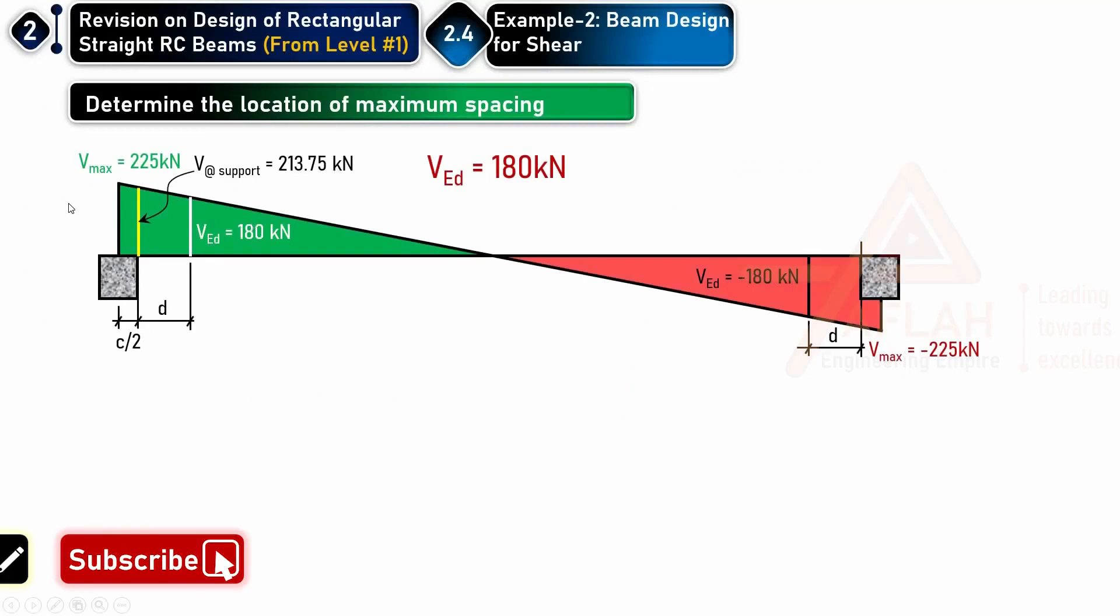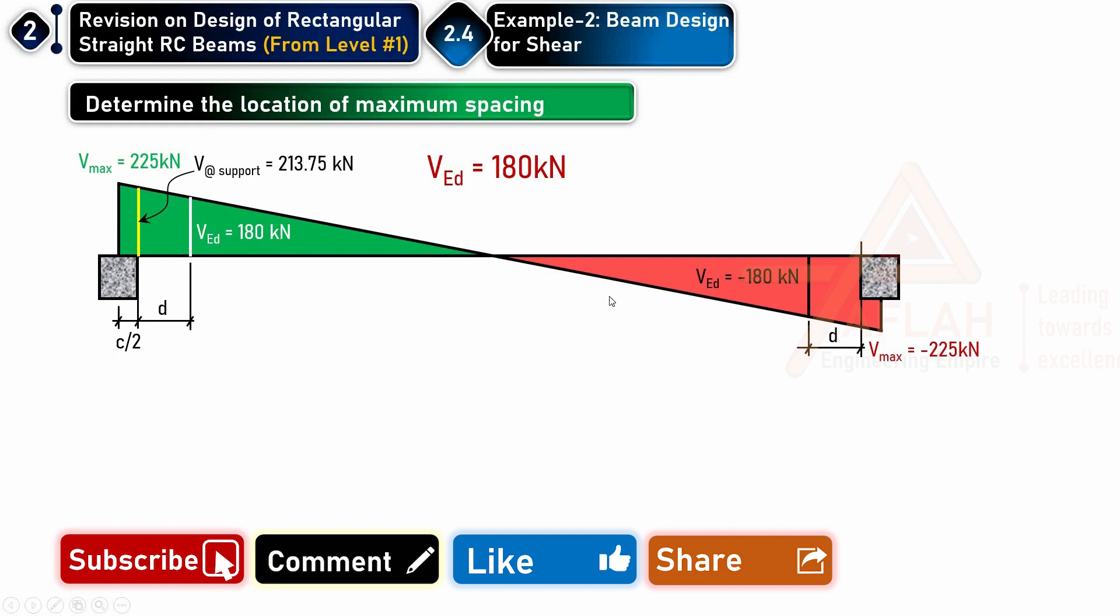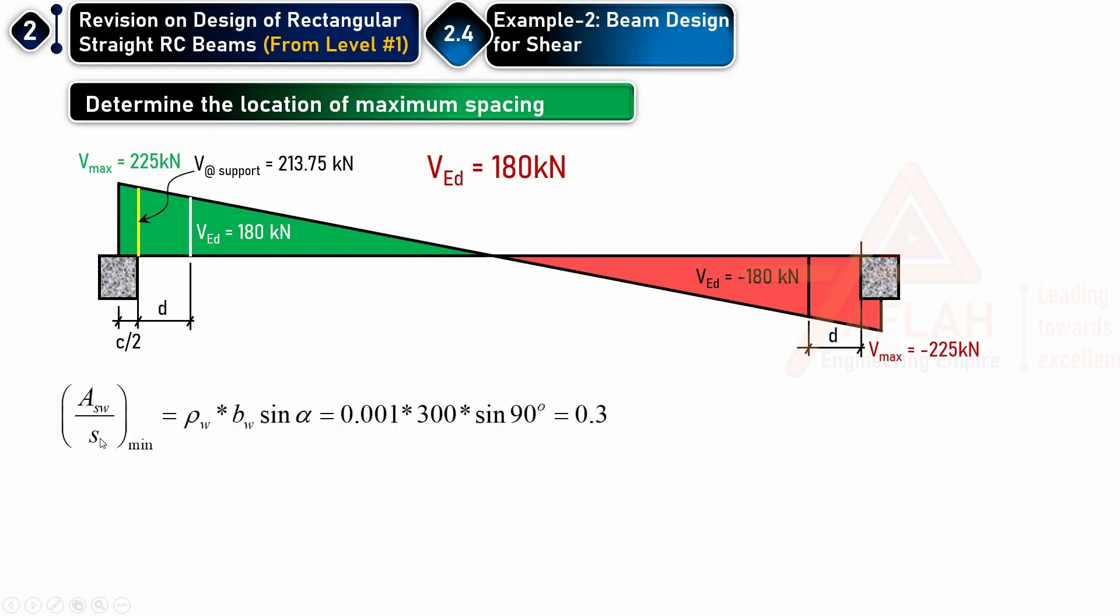Now you know everything here. This was what we derived earlier in the beginning of the example. We know that as w/s minimum is 0.3, and we know that as max...